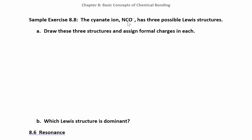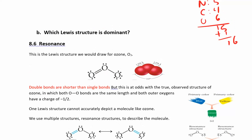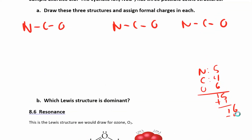Let's try another example: NCO⁻. When given three atoms in a row like that, keep them in that order for the Lewis structure. Nitrogen has 5 valence electrons, carbon has 4, and oxygen has 6, giving 15. Because it has a negative charge, we add one more for 16 total electrons to work with.